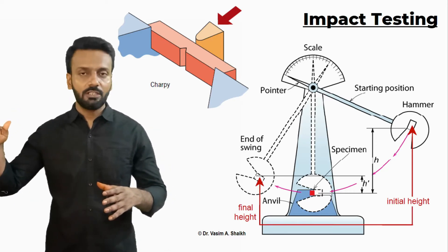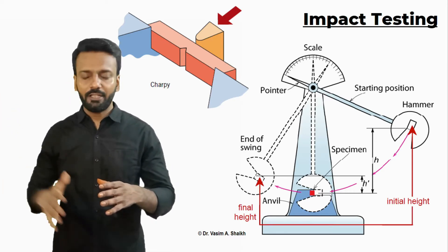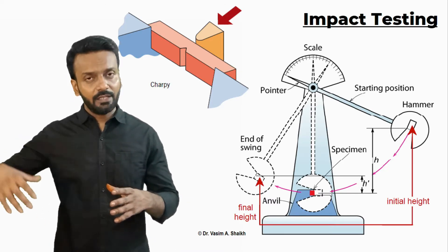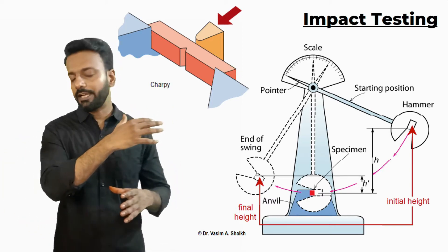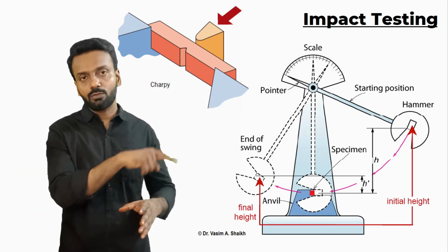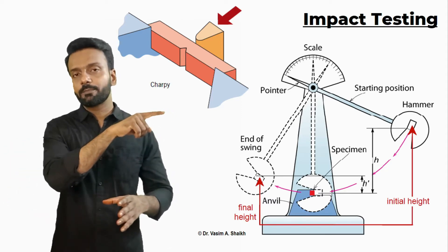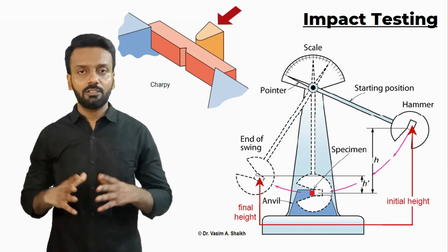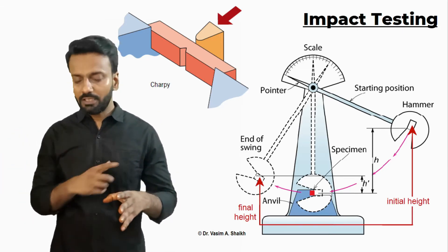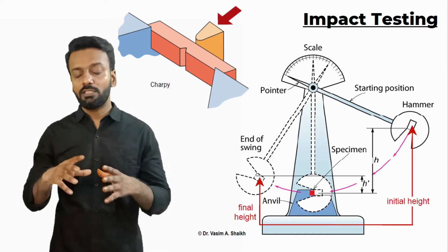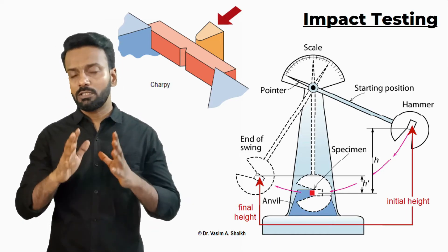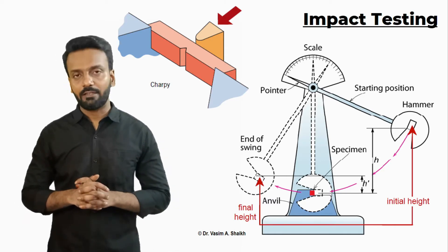The hammer is raised to a certain level, then it is dropped under gravity, it falls, it hits the specimen, and then it goes beyond to a certain height. Most of the time when the material is brittle the hammer rises to a greater height, and when the material is more ductile the hammer stays lower. All these readings are recorded with the help of a pointer on the scale on the apparatus.